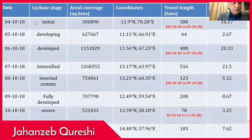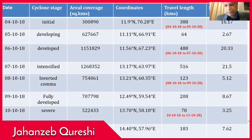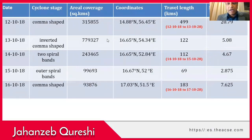This table shows the dates, the cyclone stage — initially developing, developed, intensified — the aerial coverage of the cyclone in square kilometers, the coordinates, the travel length of the cyclone from one day to another date, such as 388 kilometers traveled from 4th October to 5th October 2018, and the speed of the cyclone in kilometers per hour — likewise for all dates up to 16th October 2018.